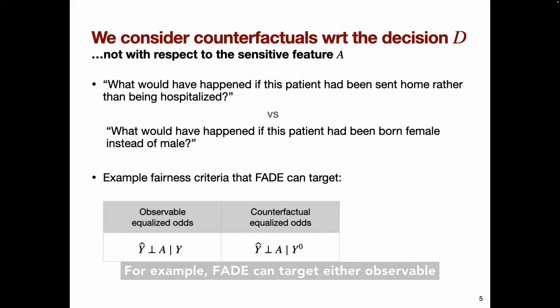The types of fairness criteria that FADE is designed to target depend on these same types of counterfactuals. For example, FADE can target either observable or counterfactual equalized odds. There are other notions of counterfactual fairness, for example, involving path-specific effects, that FADE doesn't target. I won't attempt to characterize here when we should care about observable versus counterfactual fairness or different types of counterfactual fairness, but you can see the paper on archive for background and references.